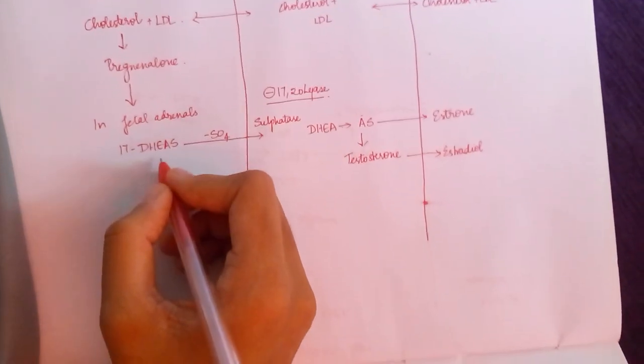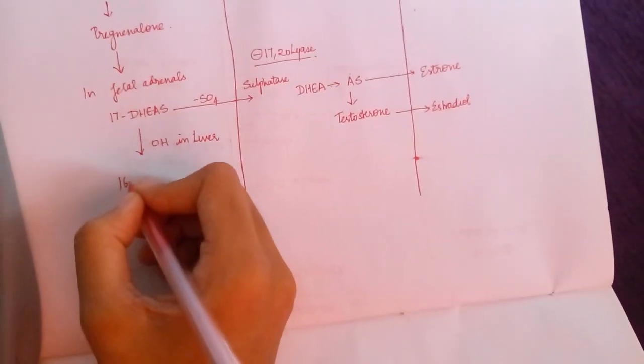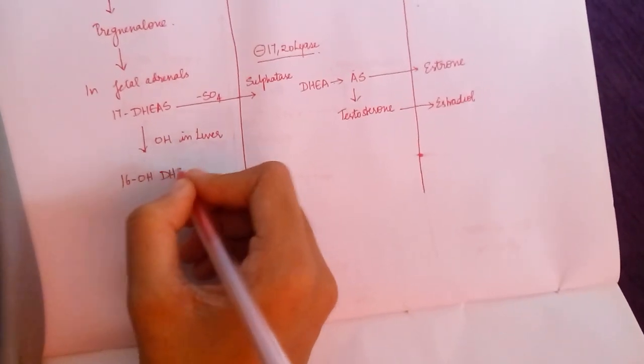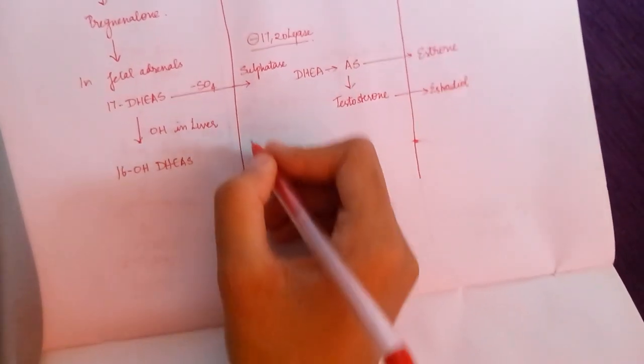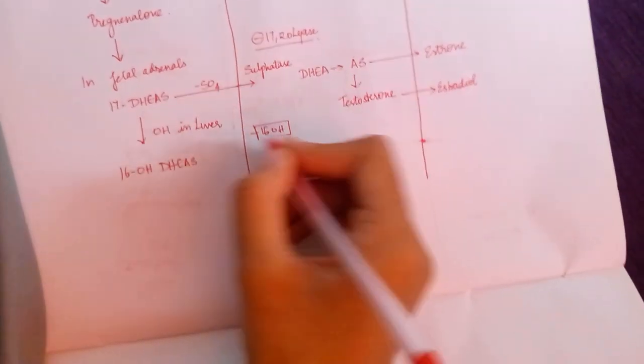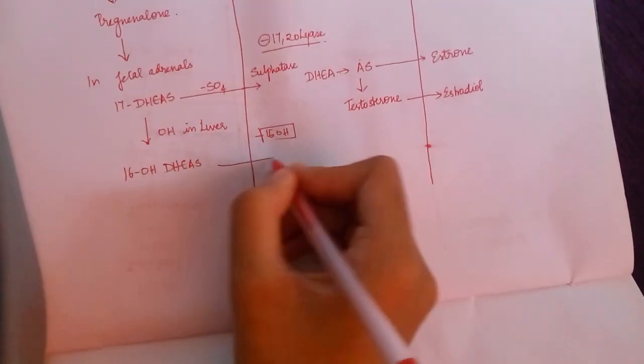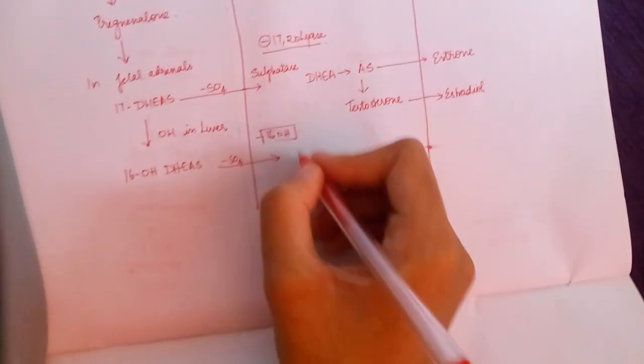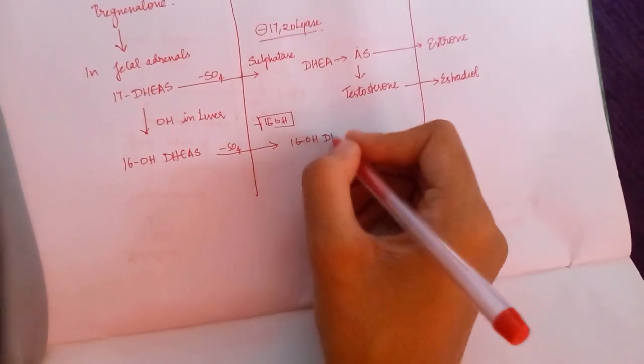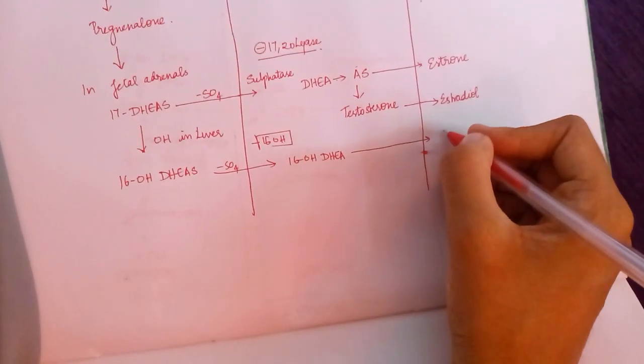Further, this 17-dehydroxyepiandrostenedione undergoes hydroxylation in the liver, forming 16-hydroxydehydroepiandrosterone sulfate. This enzyme is absent in the placenta, so we get it from the fetus only. This again undergoes removal of a sulfate group, forming 16-hydroxydehydroepiandrosterone, which provides the most important substrate.